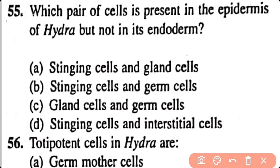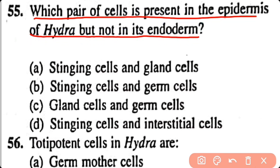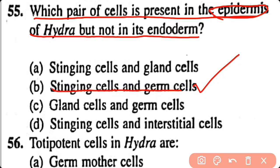Question number 55. Which pair of cells is present in the epidermis of Hydra but not in its endoderm? Stinging cells and gland cells, stinging cells and germ cells, gland cells and germ cells, stinging cells and interstitial cells. Option B. Stinging cells and germ cells are present in the epidermis of Hydra and they are absent in the endoderm.